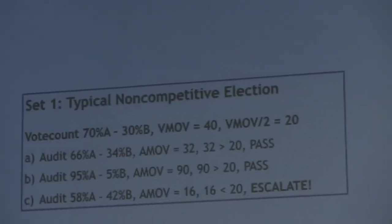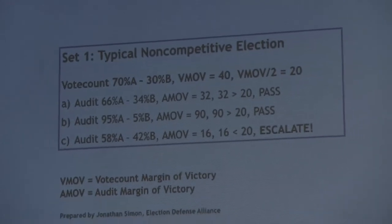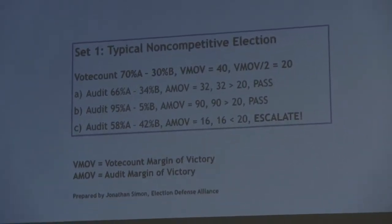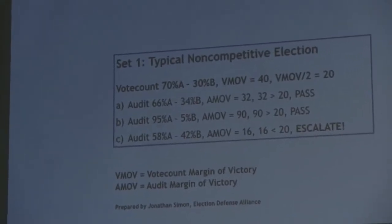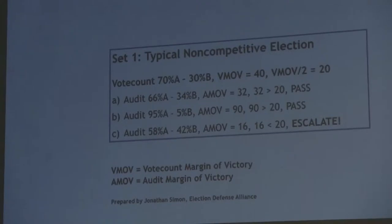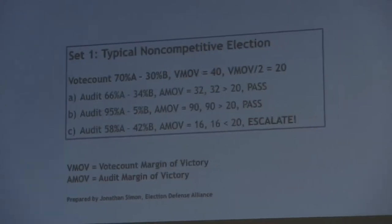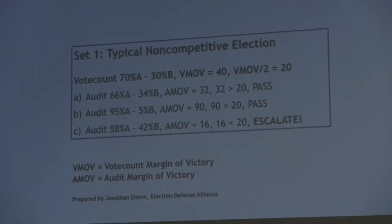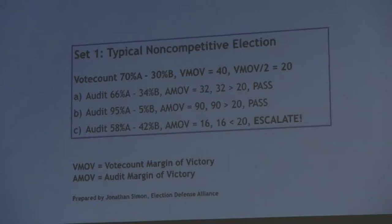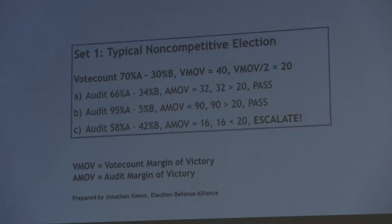The first slide is an election that goes 70-30. The vote count margin of victory (VMOV) is 40. Half of that — VMOV over two — is 20, and that becomes your standard. Audit number one: 64-34. Audit margin of victory is 32. 32 is greater than 20, so the election passes — the audit is mathematically in the neighborhood of the vote count. Audit number two: 95-5. Somebody really screwed up this election, but not in a dangerous direction. Audit margin of victory is 90, which is greater than 20 — in fact greater than 40. Election passes.